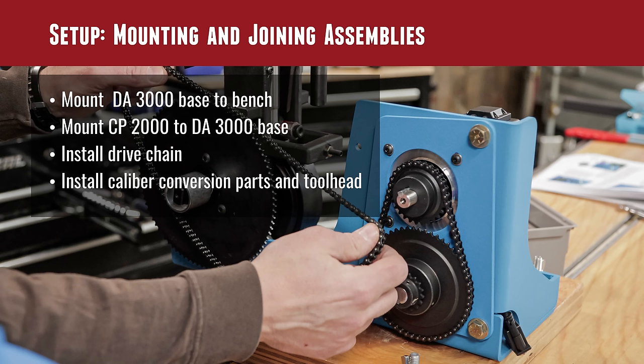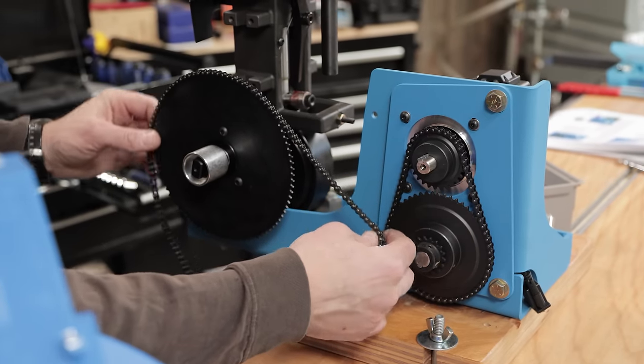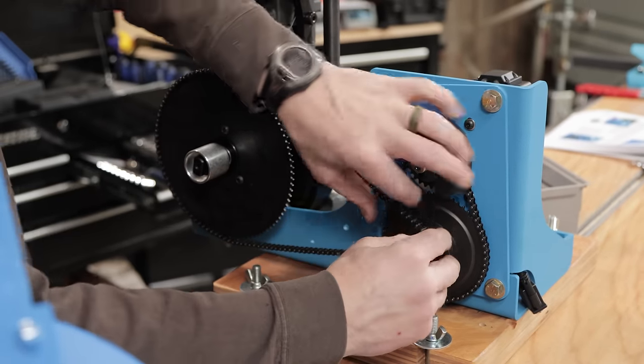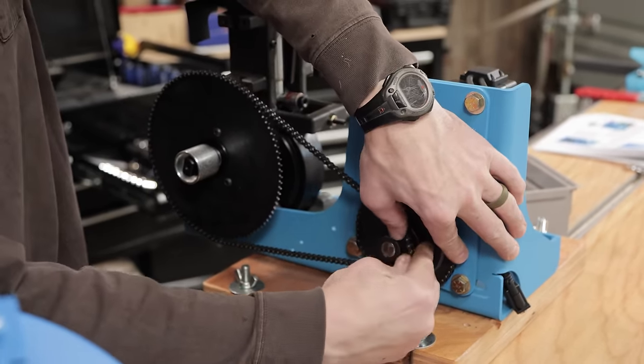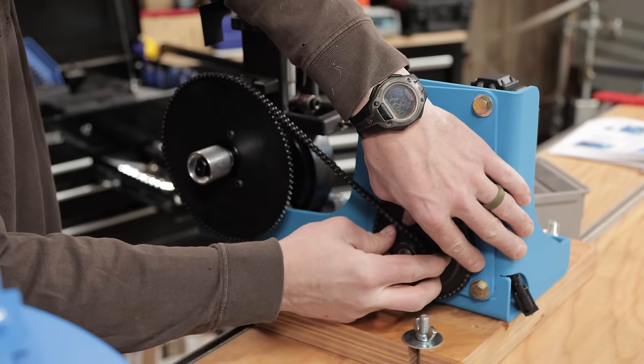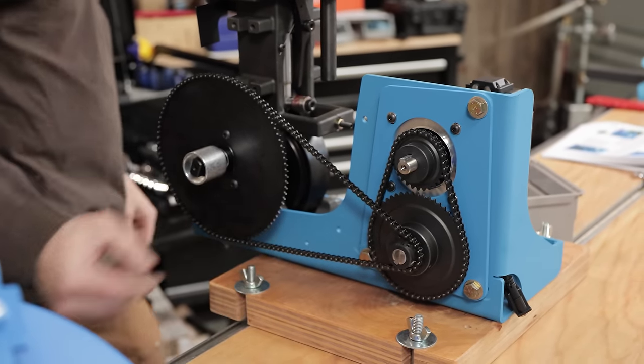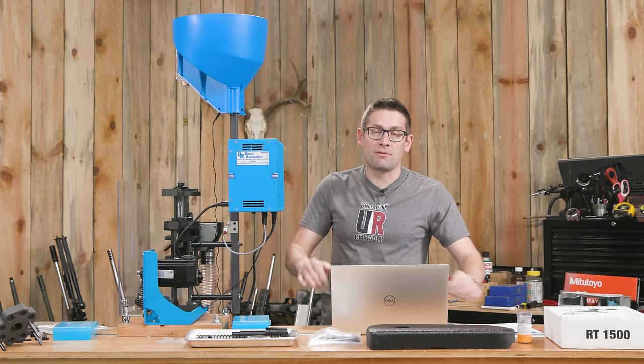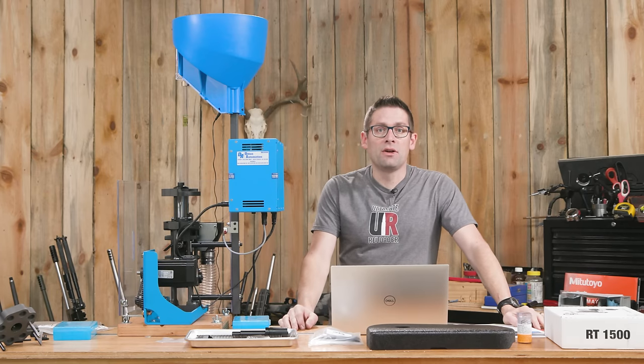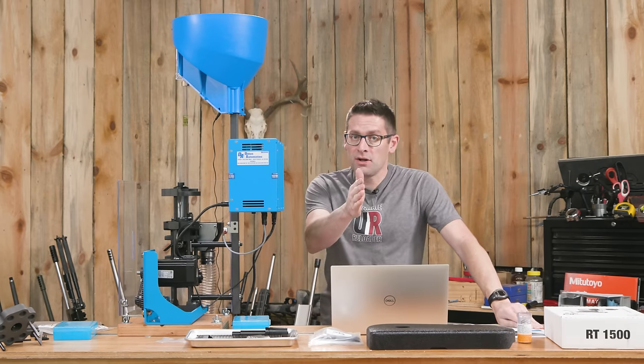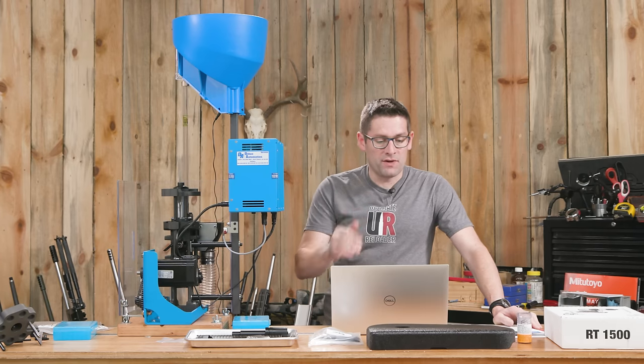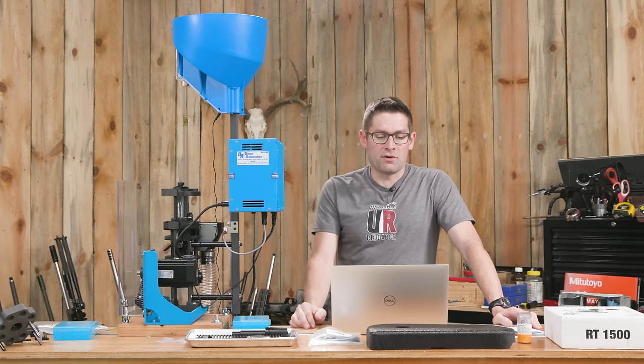So once you have your RL1100 or CP2000 attached to the DA3000 base, you can then install the drive chain. This is like a miniature bicycle chain. The entire motor assembly rotates, so you basically pull it close, put the chain in place, and then kind of let gravity do its thing, give it a little bit of an edge, take the slack out and then tighten the three bolts. That's about all there is to the drive chain install. And then you take a sight line look down the two sprockets and make sure that everything is aligned correctly.